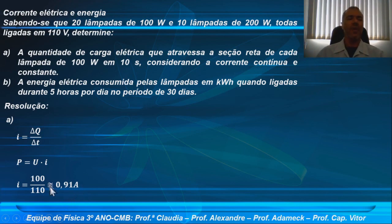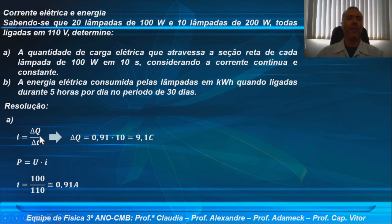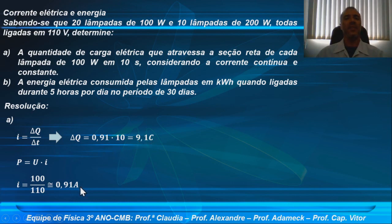Agora que eu tenho a intensidade de corrente elétrica, eu posso voltar lá naquela primeira relação e encontrar a quantidade de carga elétrica. Eu vou passar para o outro lado da igualdade o intervalo de tempo ΔT, que vale 10 segundos. Então, a quantidade de carga vai ser igual à intensidade de corrente, 0,91, vezes 10 segundos, dando 9,1 coulombs. Lembre-se que 0,91 amperes representa 0,91 coulombs por segundo, multiplicado por 10, resulta em 9,1 coulombs.